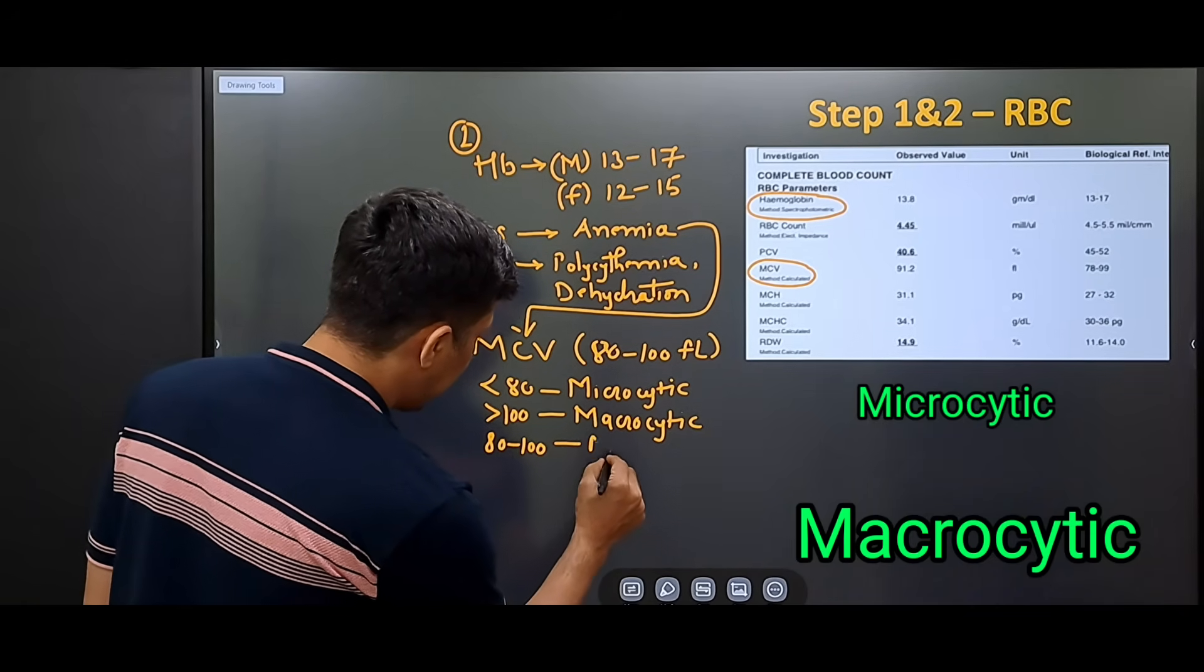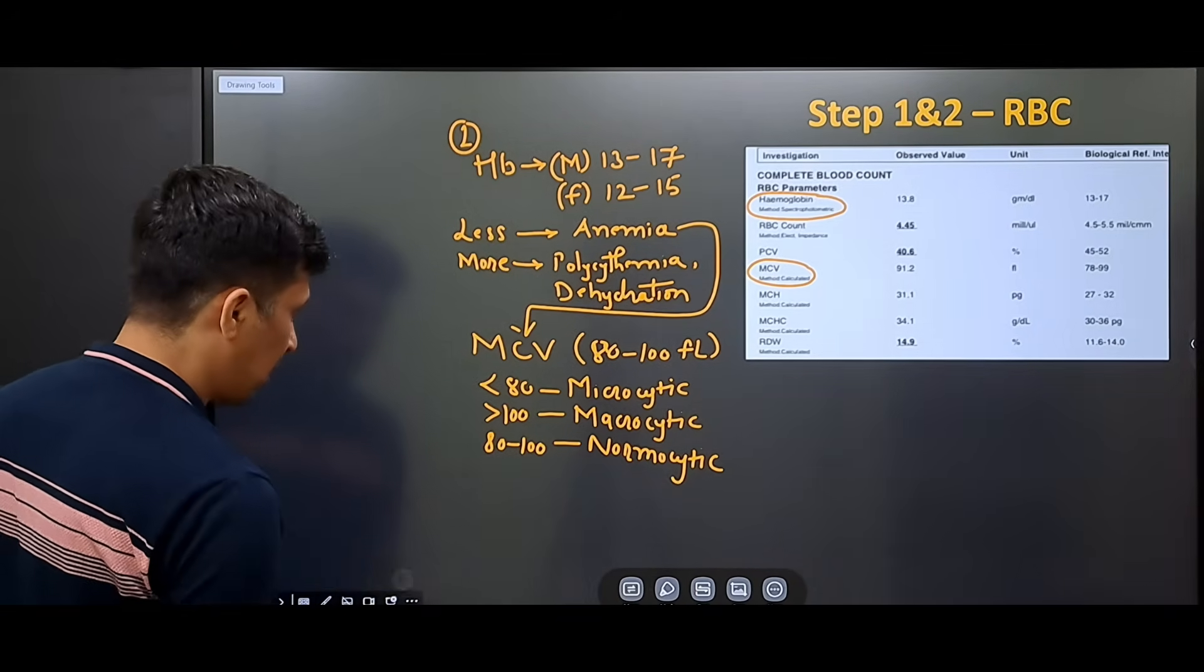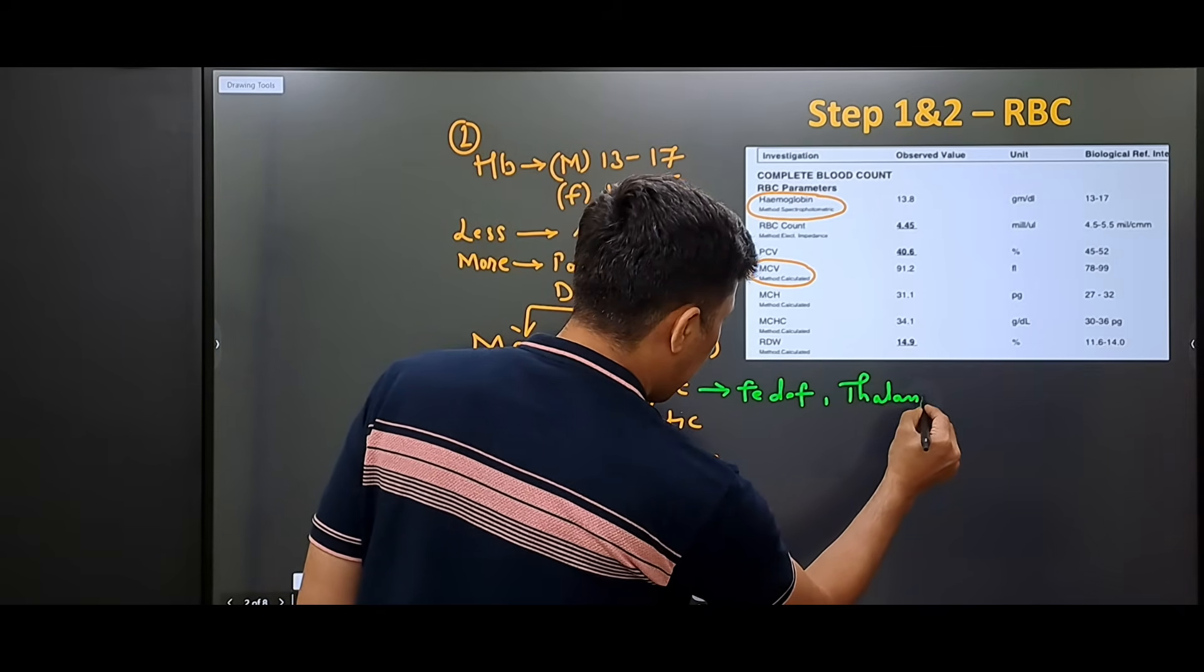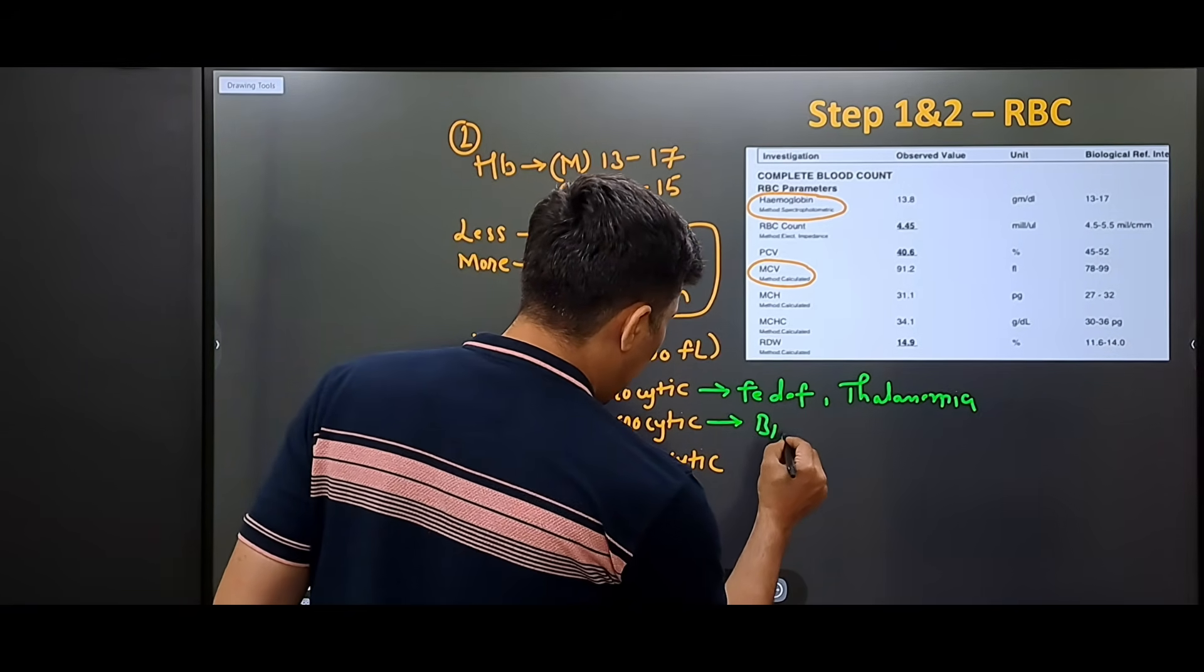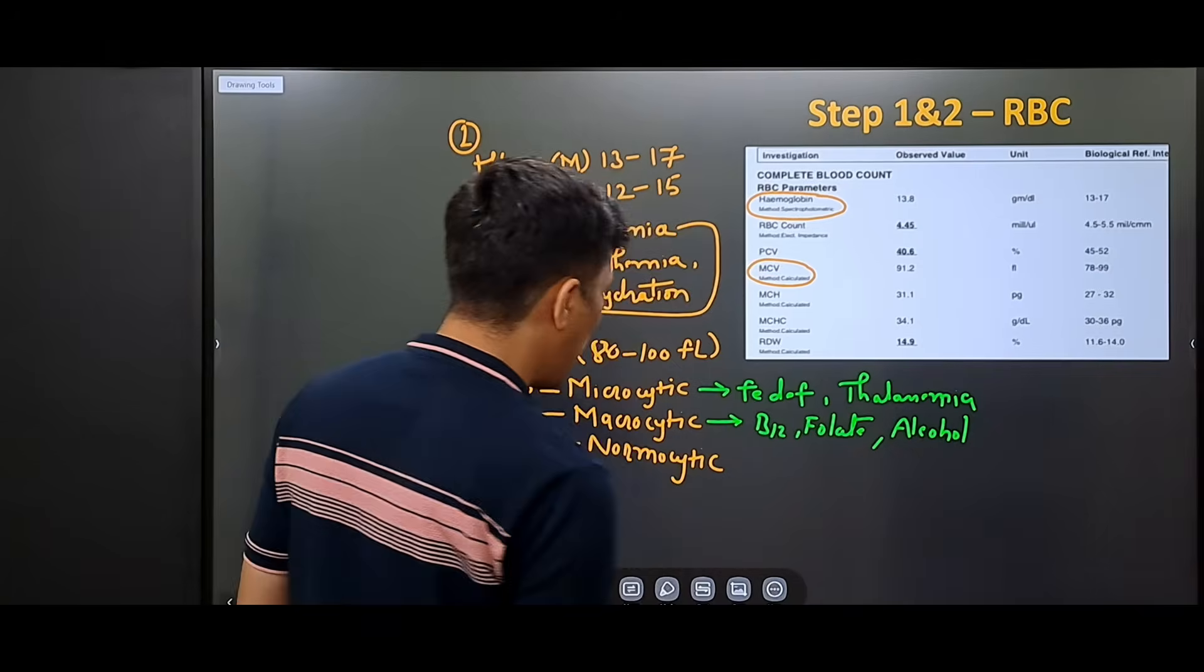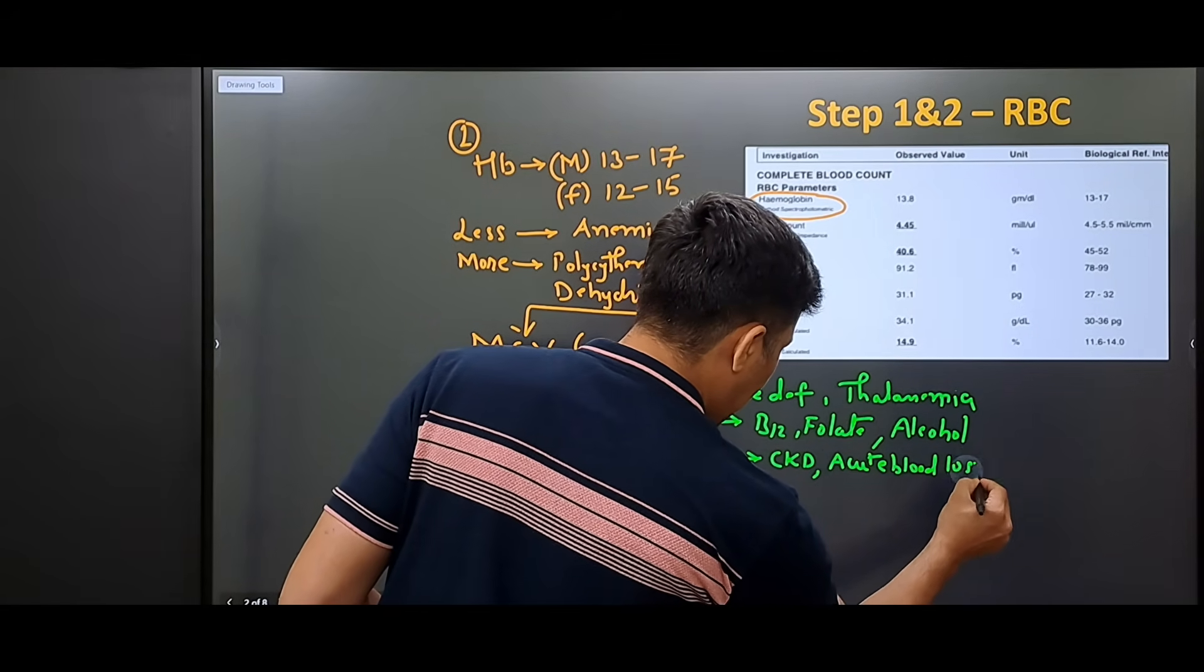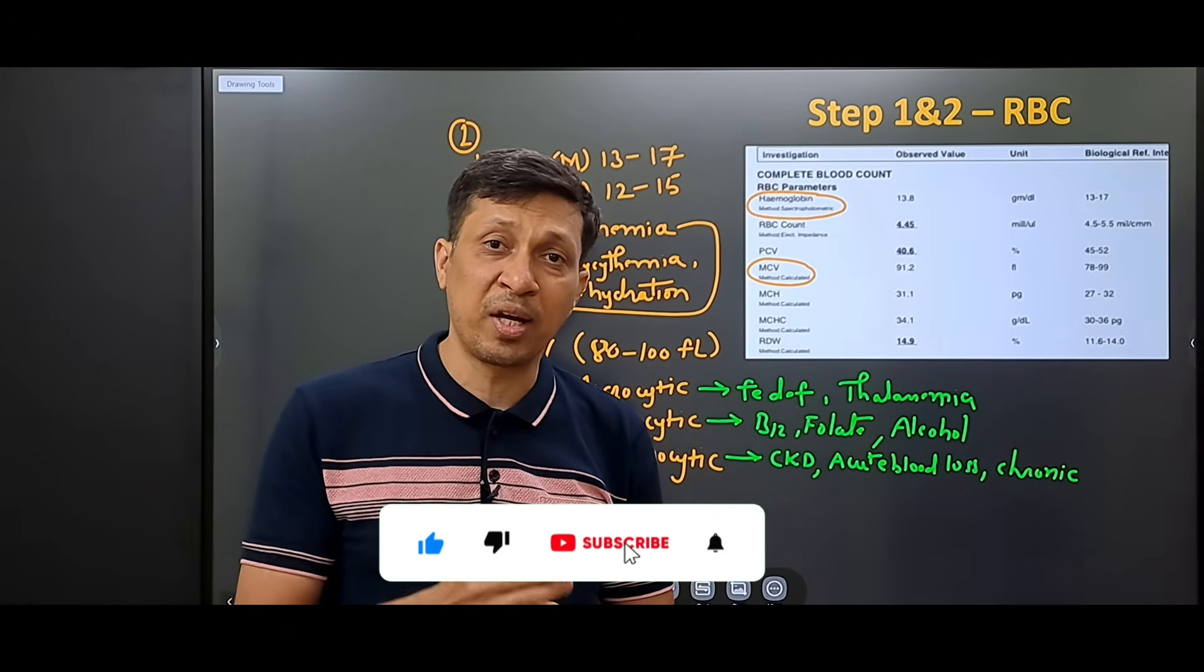Now let's see some examples. Microcytic anemia examples are iron deficiency and thalassemia. Examples of macrocytic anemia are B12 or folate deficiency and it is also seen in patients taking alcohol. Examples of normocytic anemia are patients of CKD, acute blood loss and patients with some chronic disease. These were our first two steps where we have assessed the RBC.